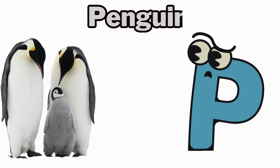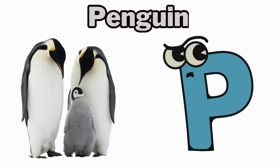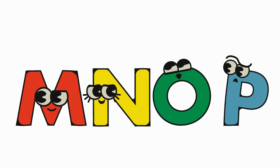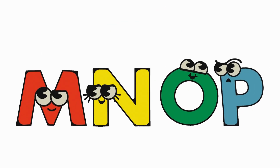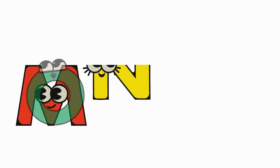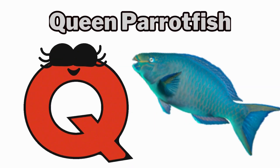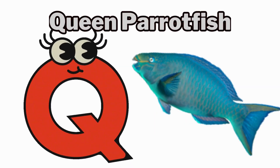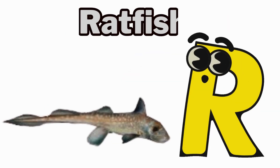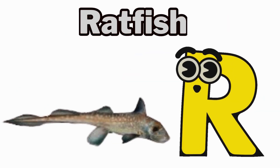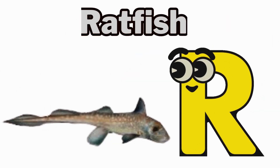P is for penguin, puh, puh, penguin. Q is for queen parrotfish, kw, queen parrotfish. R is for ratfish, ratfish.